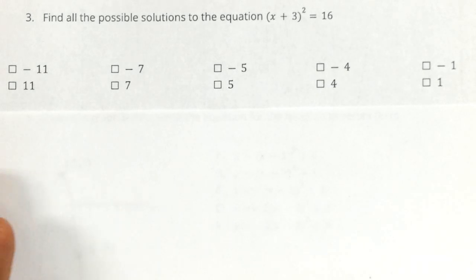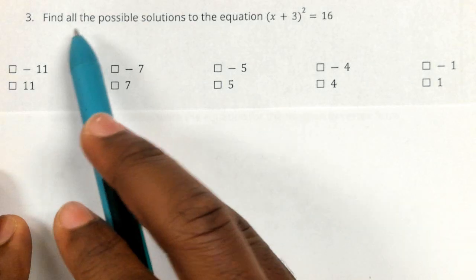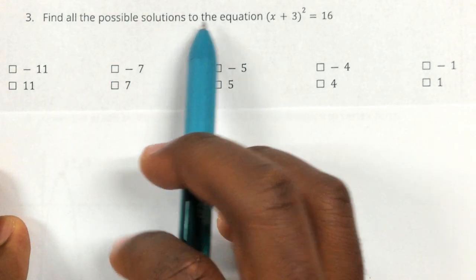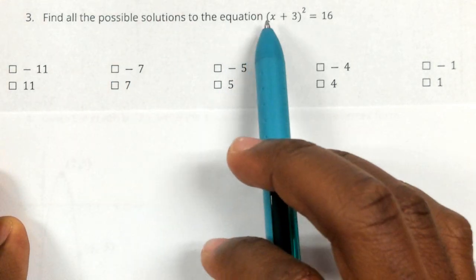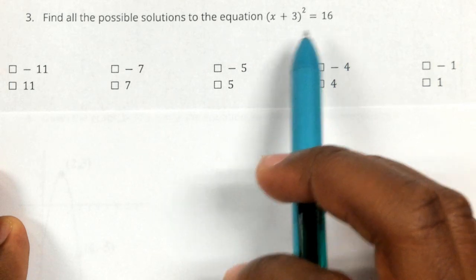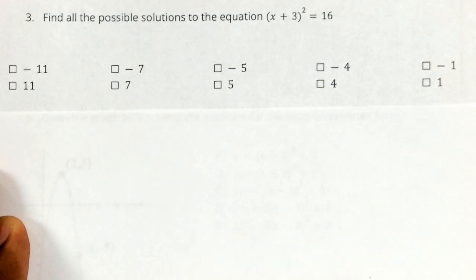Question number three says find all the possible solutions to the equation that is given right here. So when trying to find all those solutions, or whenever a question says you're supposed to find a solution, it's asking you to find the value of X.